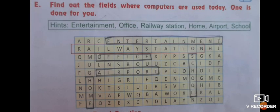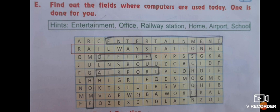Next, Part E is very interesting — try to do it by yourself. There are some hints given. Find out the fields where computers are used today; one is done for you. The words given in the hints, you have to find in the box. Railway station is already done. The remaining words are: Entertainment on the first line, Office on the third line, Airport on the fifth line, and Home and School on the sixth line.